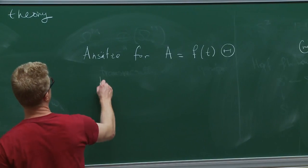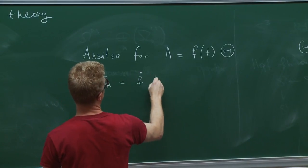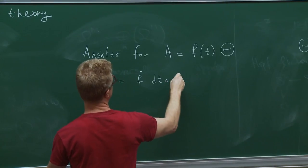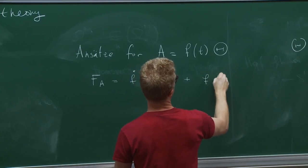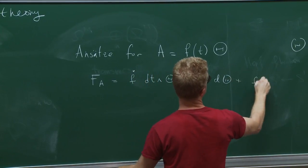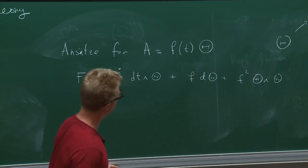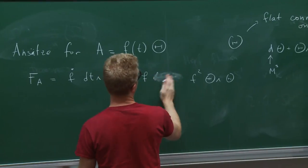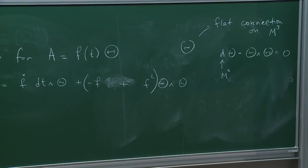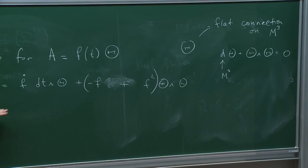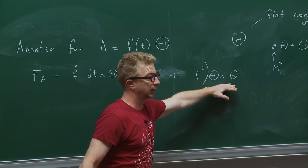If you compute the curvature of this connection, it's going to be something like f-dot dt∧theta plus f dtheta plus f-squared theta∧theta, which you can rewrite using the flatness equation. The only component which has a time direction is the first term, and the rest is purely space-like.